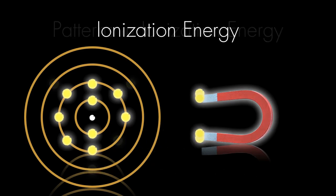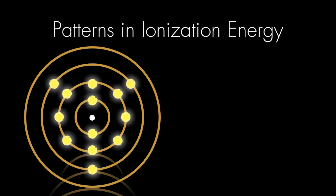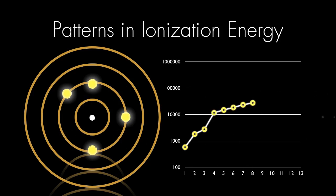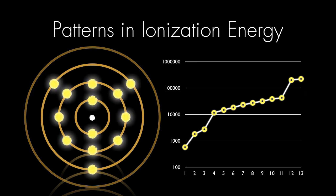There are patterns to be found in these serial ionization energies. Let's use aluminum again, but now let's graph the energy it takes to pull off successive electrons. The first thing we notice, each electron requires more energy than the previous one to pull off. What's the second thing we notice about this pattern?